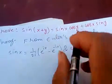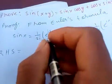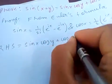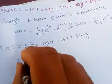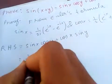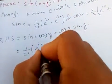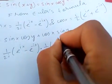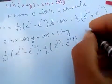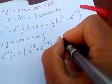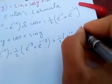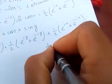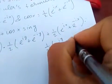Now from the right hand side: sine of x cos of y plus cos of x sine of y. Sine of x is 1 upon 2i times (e to the ix minus e to the minus ix), into cos of y which is 1 upon 2 times (e to the iy plus e to the minus iy), plus cos of x which is 1 upon 2 times (e to the ix plus e to the minus ix), into sine of y which is 1 upon 2i times (e to the iy minus e to the minus iy).